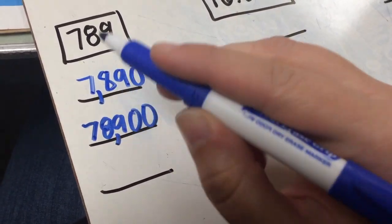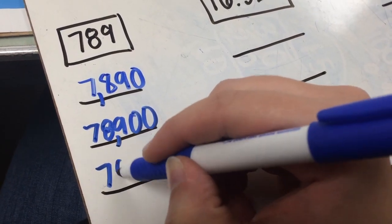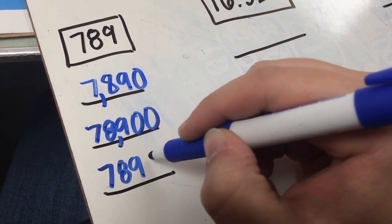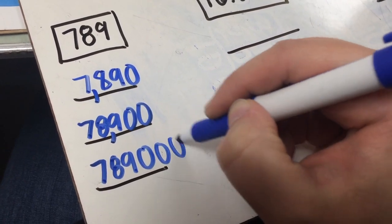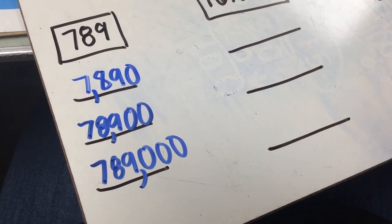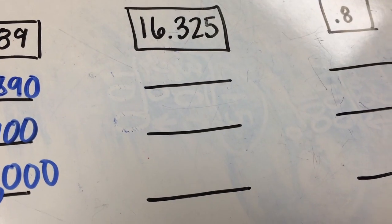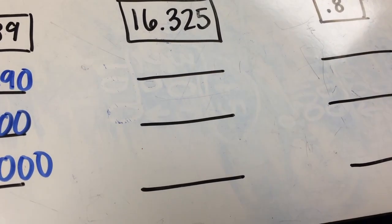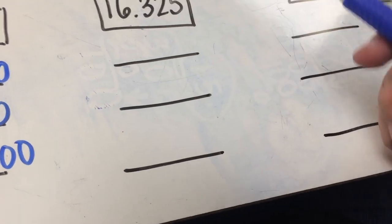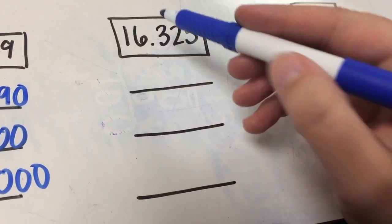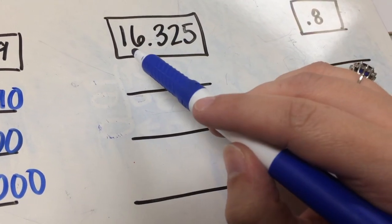And lastly for 1,000 — 789 times 1,000. Start by writing the base number and then add how many zeros in 1,000? One, two, three. Put your commas — it becomes 789,000. Now I'm on number 2. It says multiply each decimal or mixed decimal by 10, 100, and 1,000 respectively. So we're going to have to move our decimal point over.